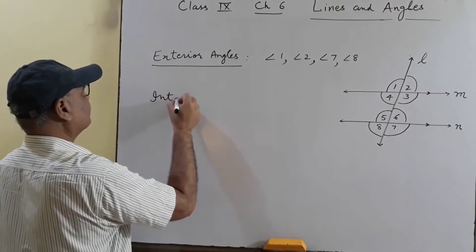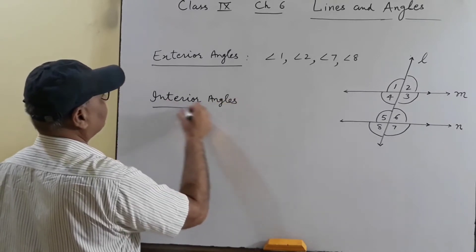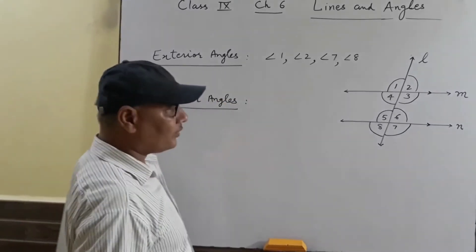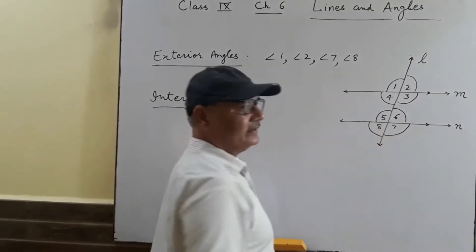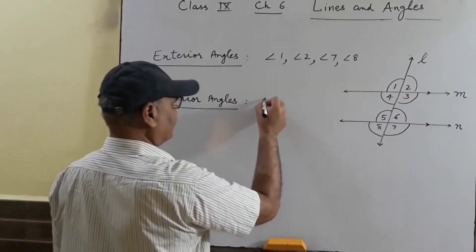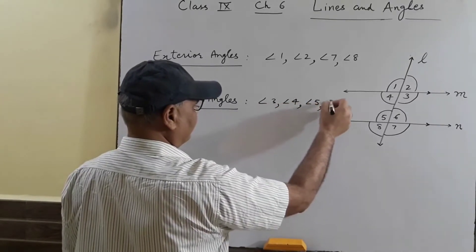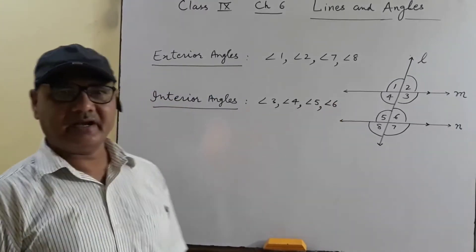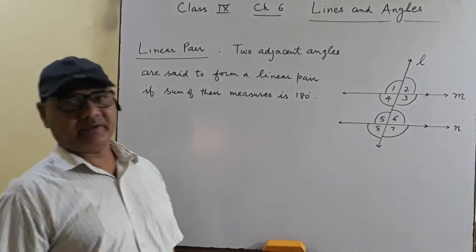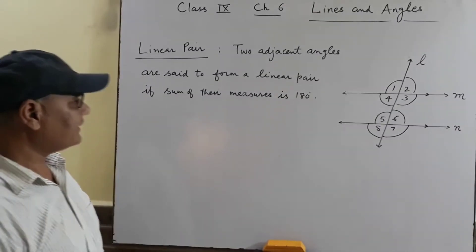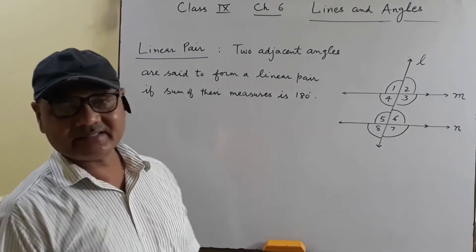Then, Interior Angles. These are the angles formed inside. Then, Linear Pair. Two angles are said to form a Linear Pair if the sum of their measures is 180 degrees.